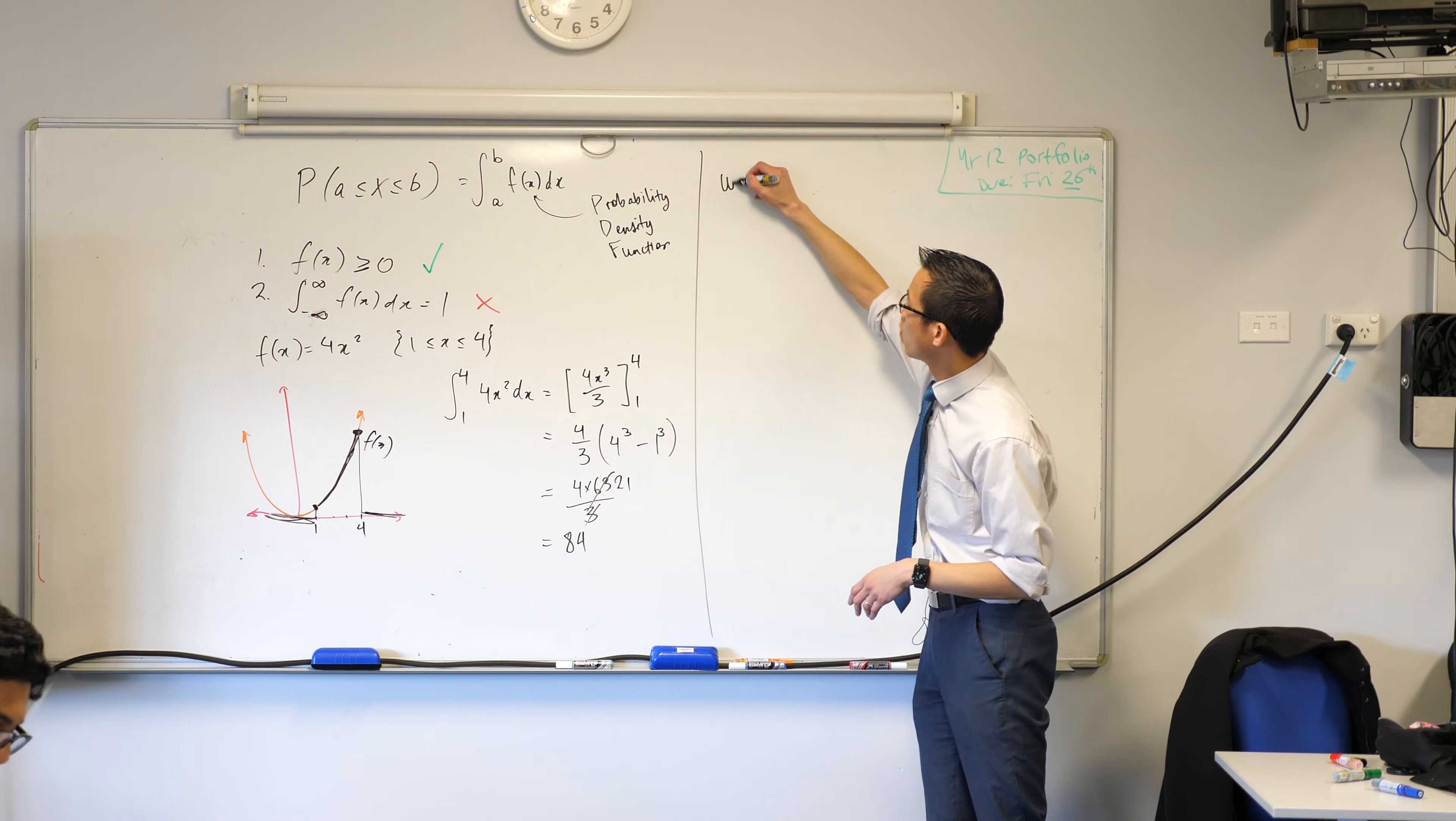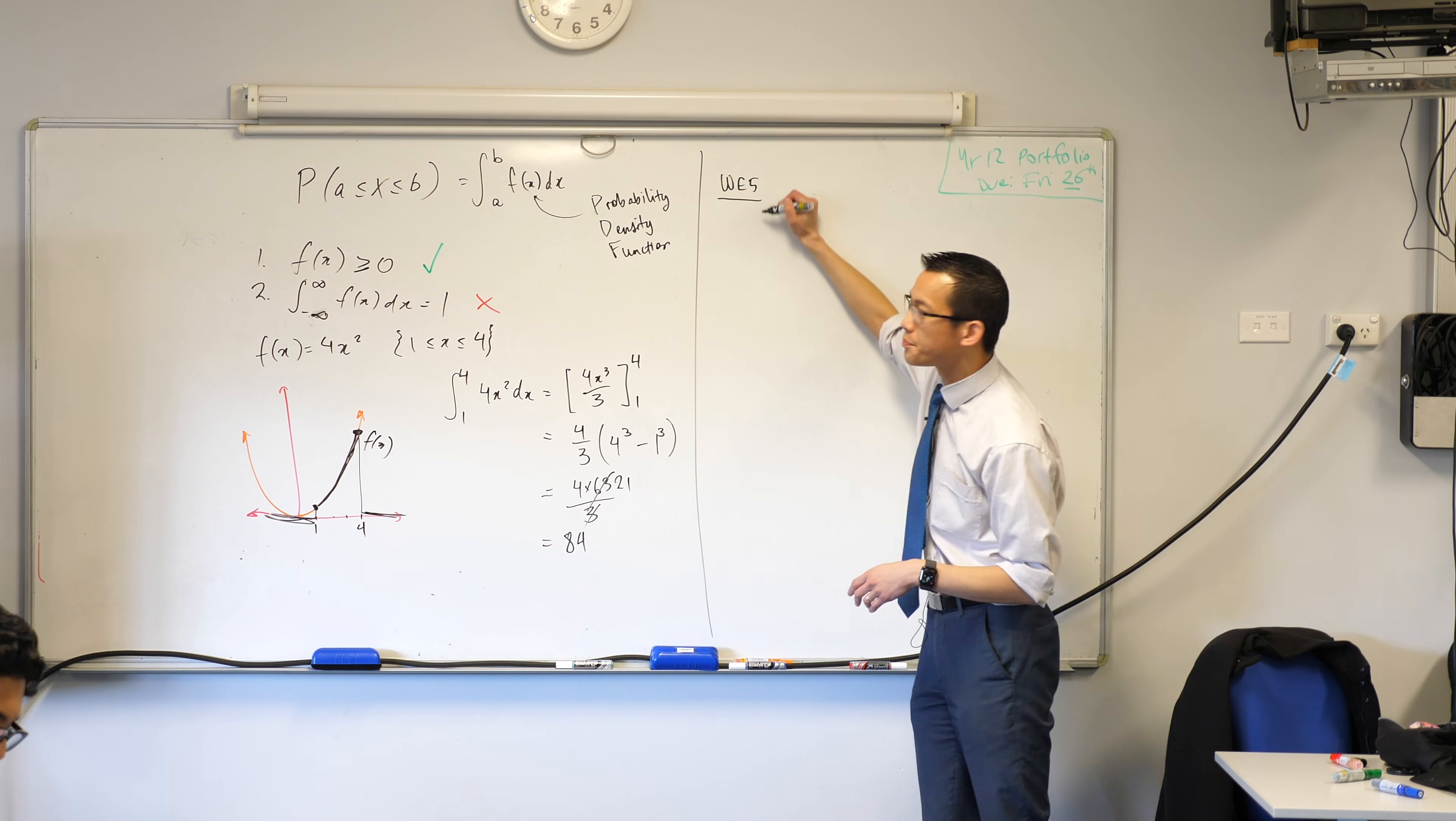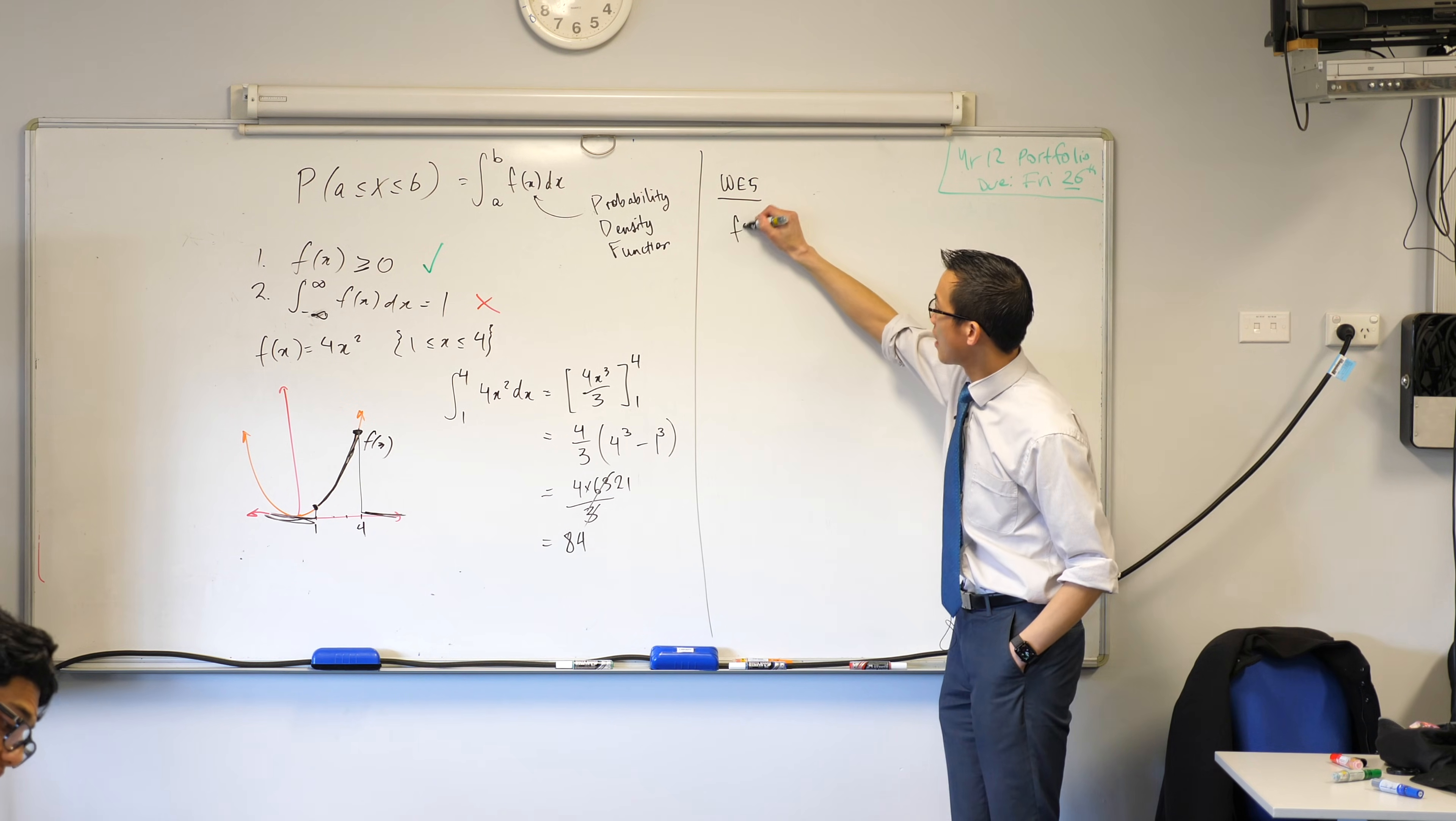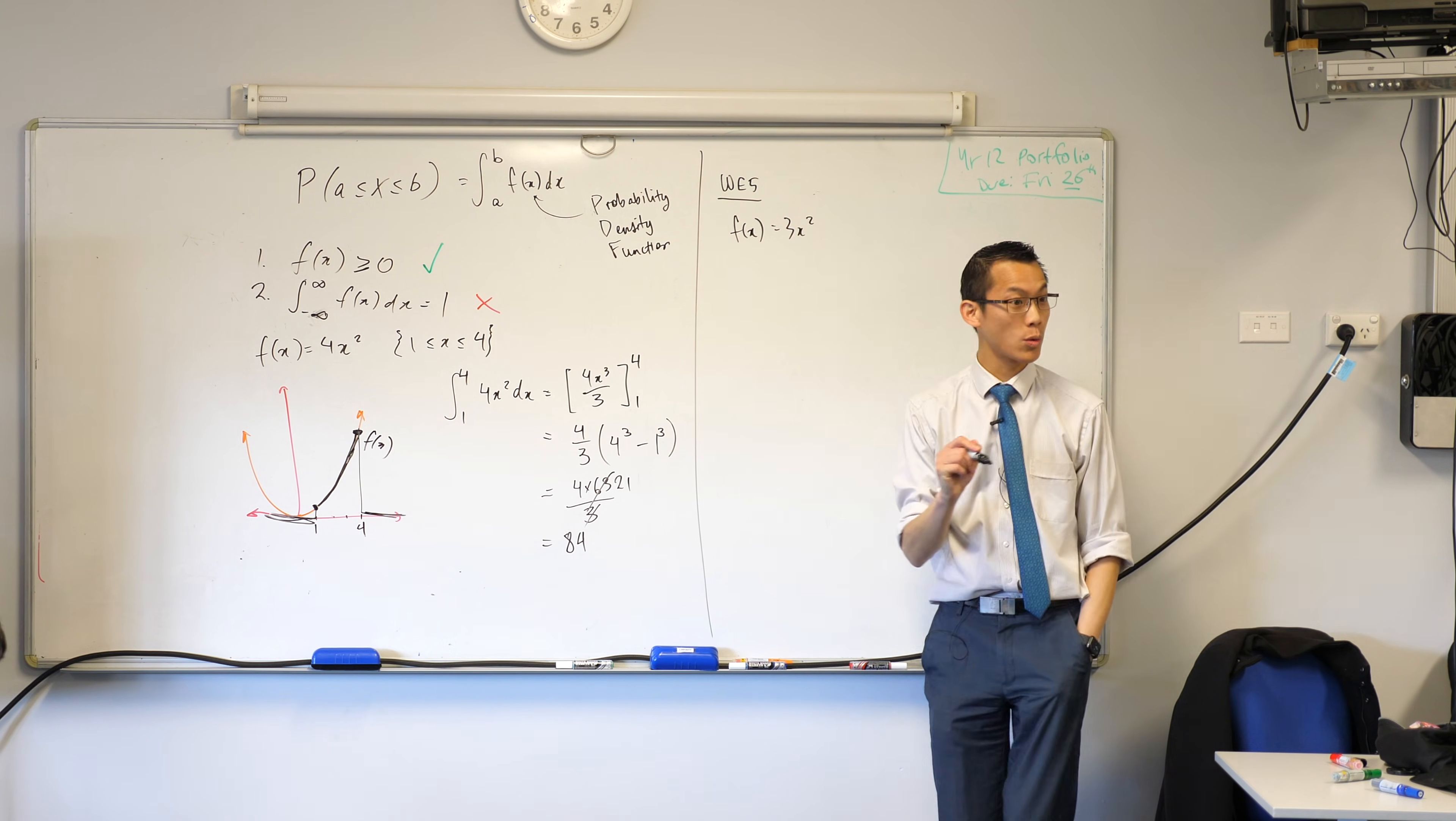So I'm just going to write up this is worked example 5. f of x, my probability density function, is given by 3x squared.